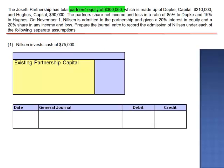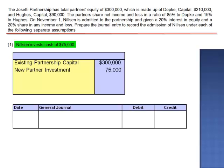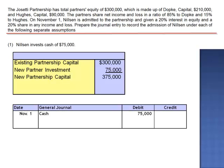The existing partnership is a $300,000 partnership. If they had $300,000 worth of equity, they also had $300,000 of net assets. Nilsen is investing $75,000 in cash, which we'll immediately record as a debit to cash. This brings the balance in new partnership assets and capital to $375,000. Nilsen is claiming a 20% ownership interest, and 20% of $375,000 is $75,000.